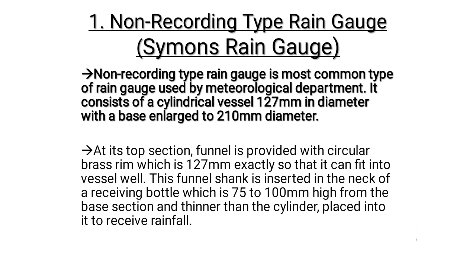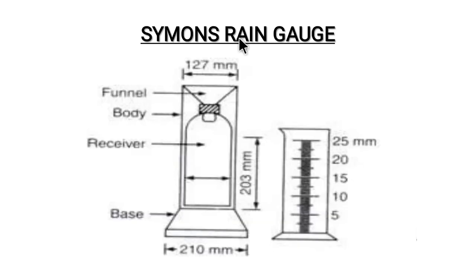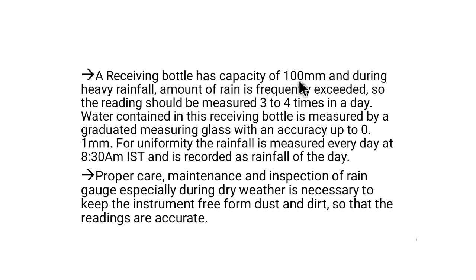The non-recording type rain gauge is the most common type used by the meteorological department. It consists of a cylindrical vessel 127 mm in diameter with a base enlarged to 210 mm diameter. As you can see in the Simpson rain gauge diagram, there is a funnel at the top and a receiver bottle of about 30 cm. The receiving bottle has a capacity of 100 mm, and during heavy rainfall the amount of rainfall frequently exceeds this, so the reading should be measured 3 to 4 times a day.